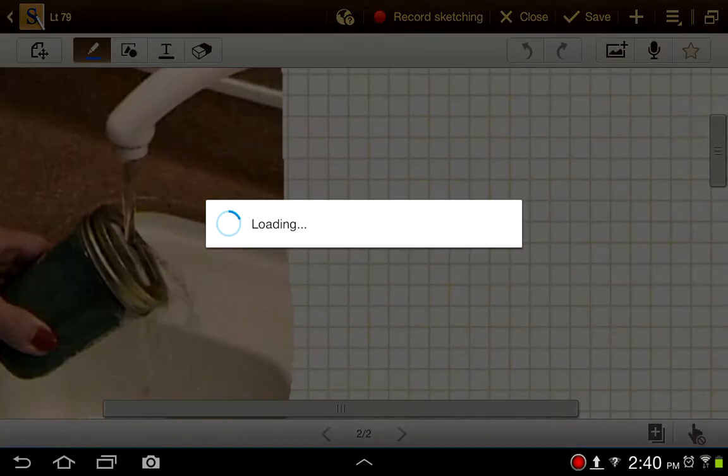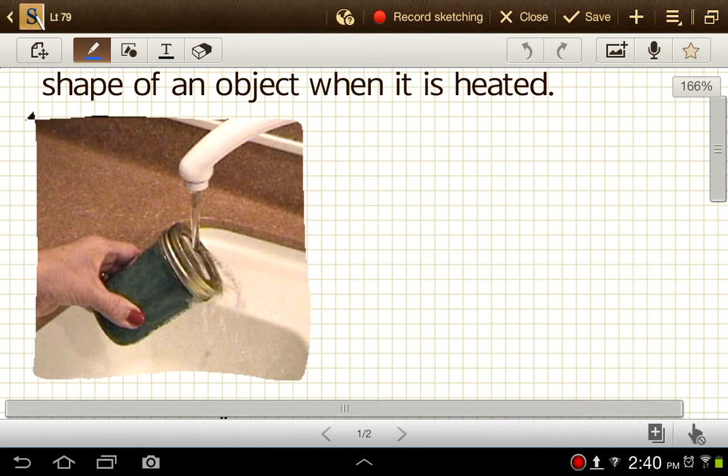So if we go back to running the jar, the lid of the jar under the hot water, what that's doing is heating up just the metal part here, or mostly the metal part here. And when that metal part heats up, the whole thing expands, and so the lid becomes a little bit looser on the jar, and we're able to remove it at that point.